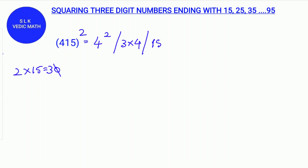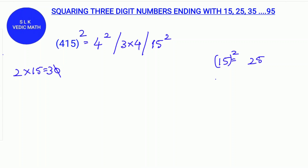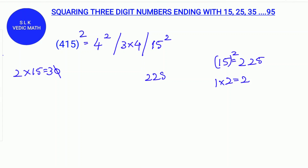For 15 square, we can use the squaring numbers ending in 5 method. For 5 square, we write 25. 1 more than 1 is 2, so we multiply 1 into 2 which is 2. So 15 square is 225. We write 225 over here.